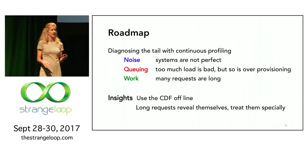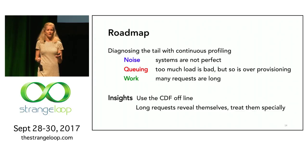If you don't remember anything else from this talk, remember that the cumulative distribution function is your friend — you can use it offline to improve tail latency.